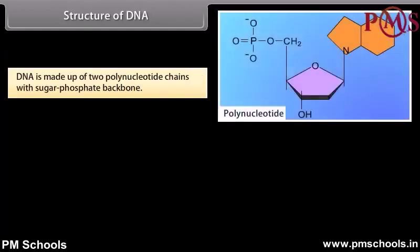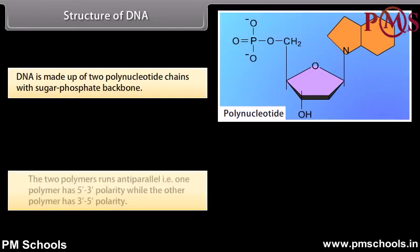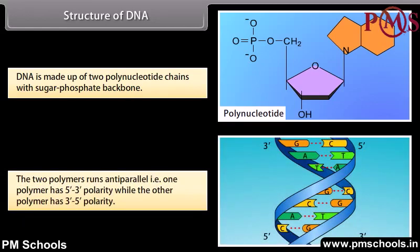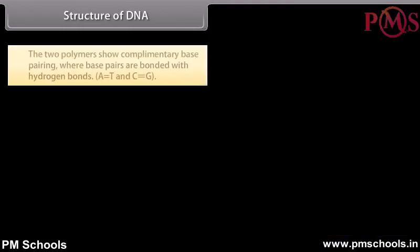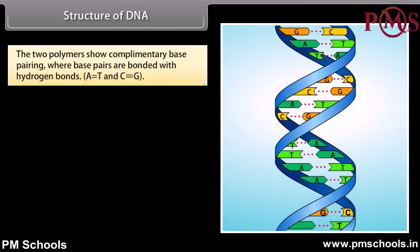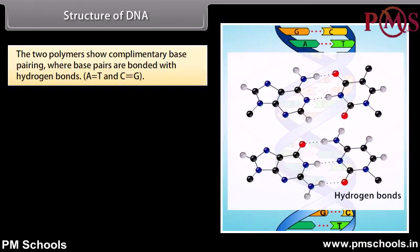Structure of DNA. DNA is made up of 2 polynucleotide chains with a sugar-phosphate backbone. The two polymers run anti-parallel — one polymer has 5' to 3' polarity, while the other polymer has 3' to 5' polarity. The two polymers show complementary base pairing, where base pairs are bonded with hydrogen bonds.